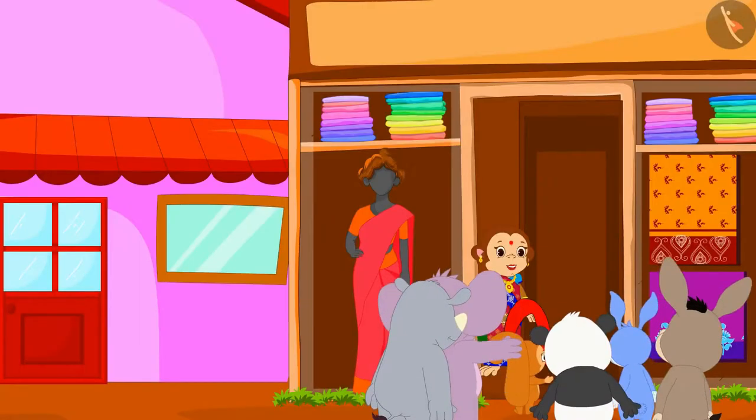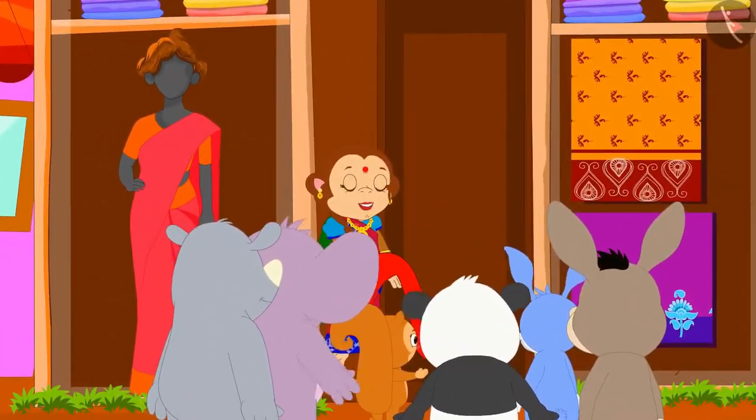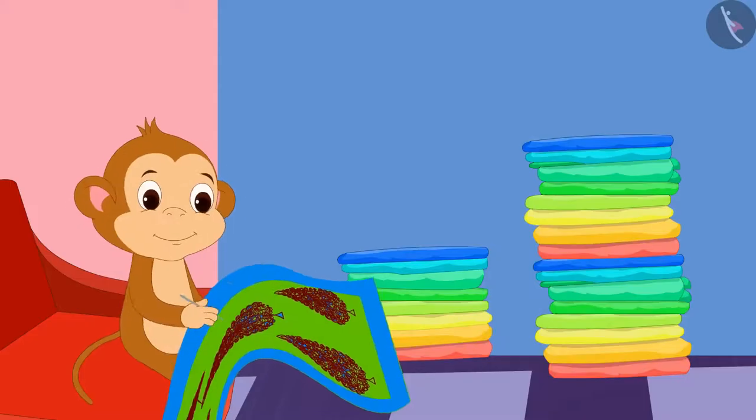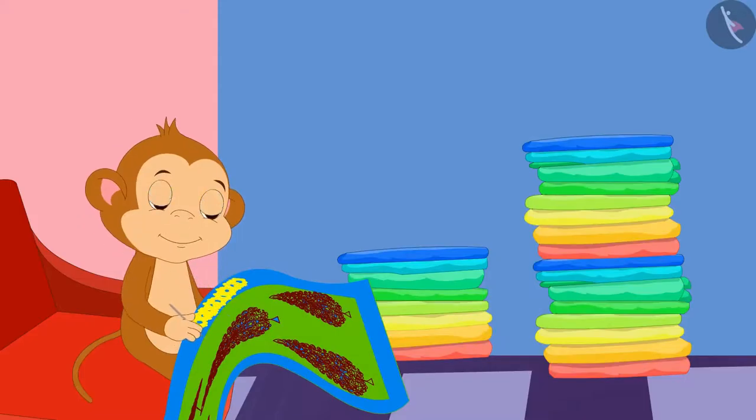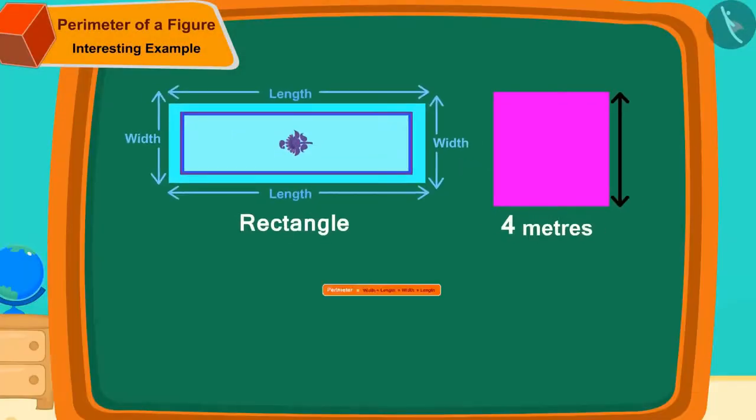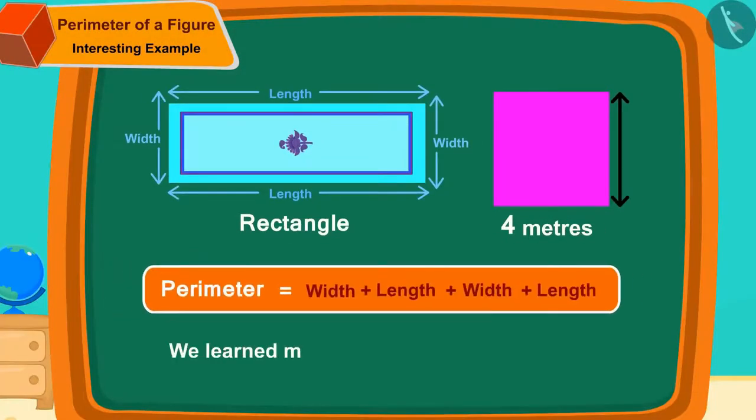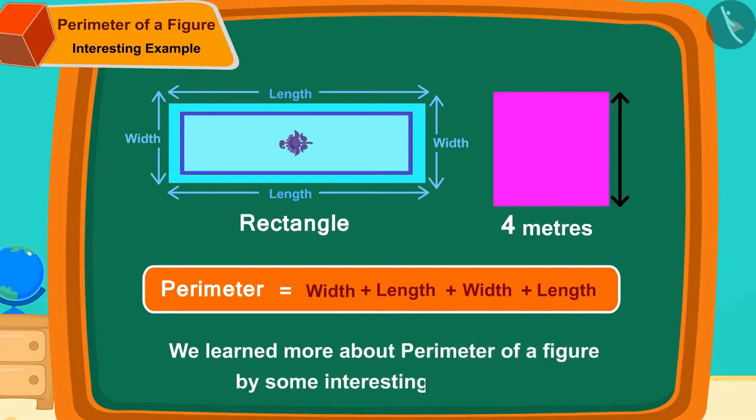Banno's shop started doing phenomenal business, so Baban also started helping her. Children, in this video, we learned more about perimeter of a figure by some interesting examples. In the next video, we will look at some of the misconceptions related to this.